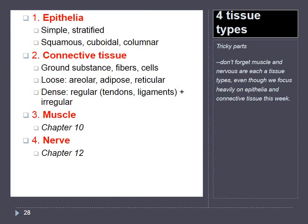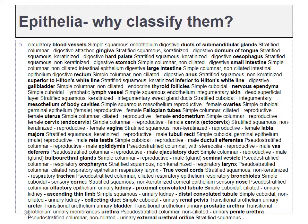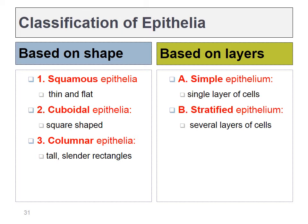Next, let's discuss some specific epithelia you'll be identifying in lab. We classify epithelia based on their shape — choosing from three words — and then based on how many layers they have, one layer or more than one. Combining these two characteristics gives us the full name of the epithelium.